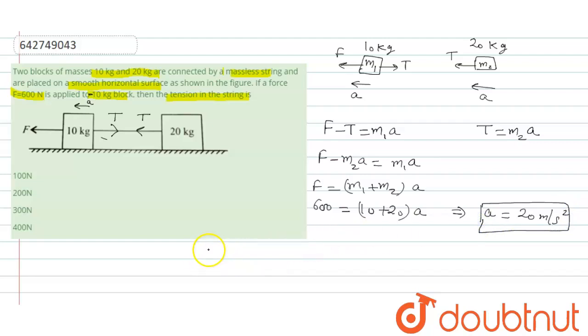Now, if F is applied on 10 kg block, then T equal to M2a and it becomes 20 into 20. So 400 N is the tension in the string. That is the answer.